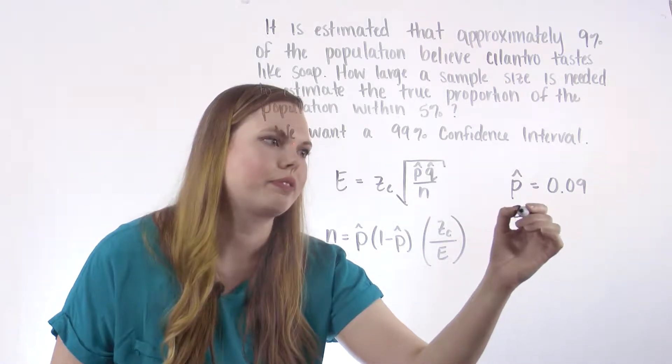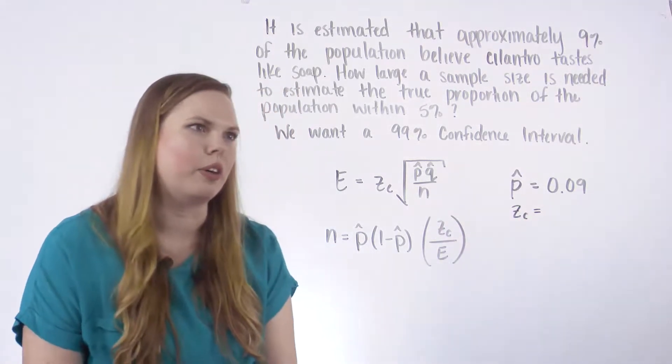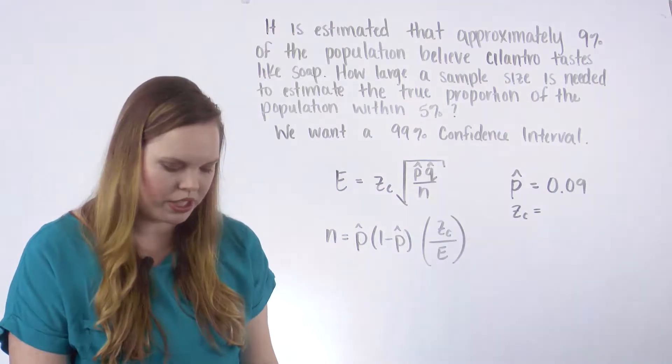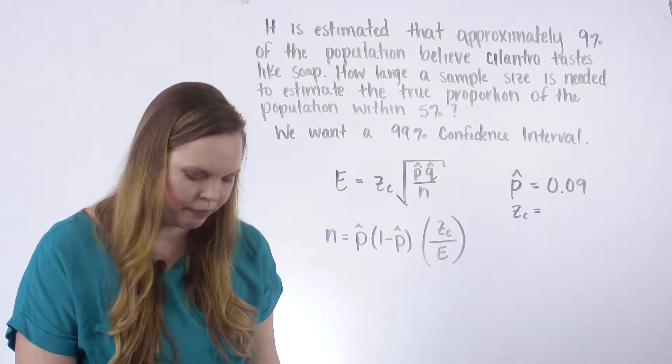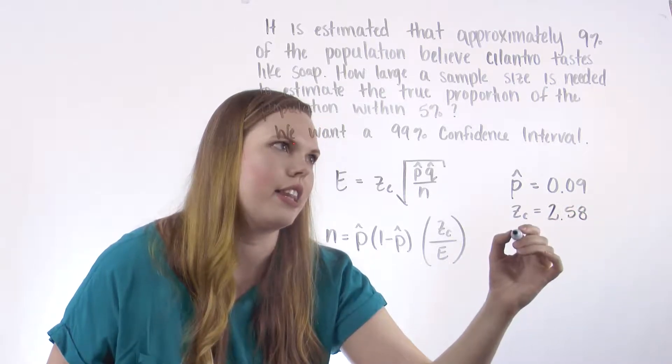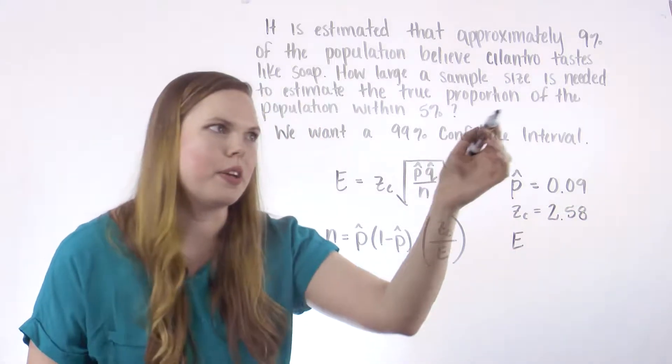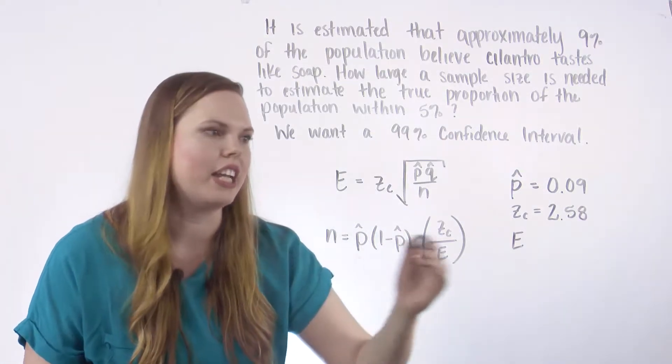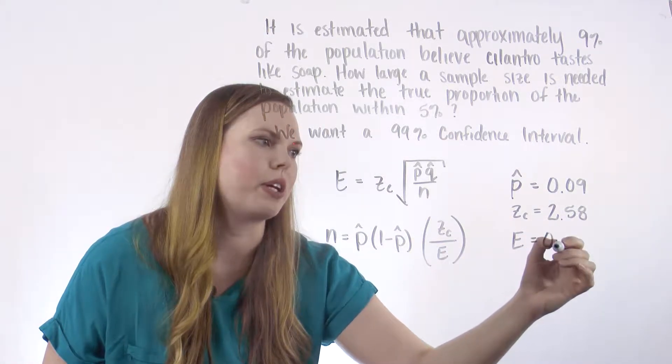And then our z sub c, found using that little table in our normal distribution for 99% is 2.58. And then they say that we want to estimate it within 5%, so our margin of error is 0.05.